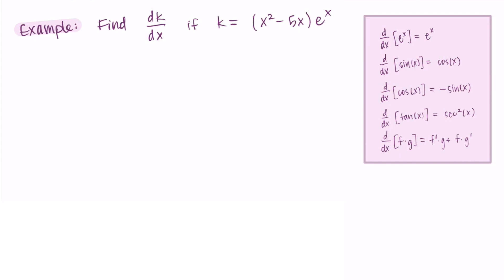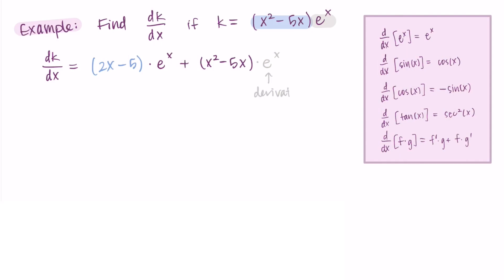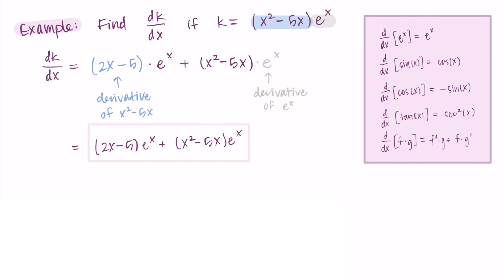We have two pieces being multiplied: (x² − 5x) multiplied by eˣ. When we find dk/dx using the product rule, we take the derivative of the first function — that's (2x − 5) — multiply it by eˣ, then leave the first function (x² − 5x) by itself and multiply by the derivative of eˣ, which is eˣ. You could factor some stuff out or distribute, but I'd probably just leave it like this. So our derivative is (2x − 5)eˣ + (x² − 5x)eˣ.